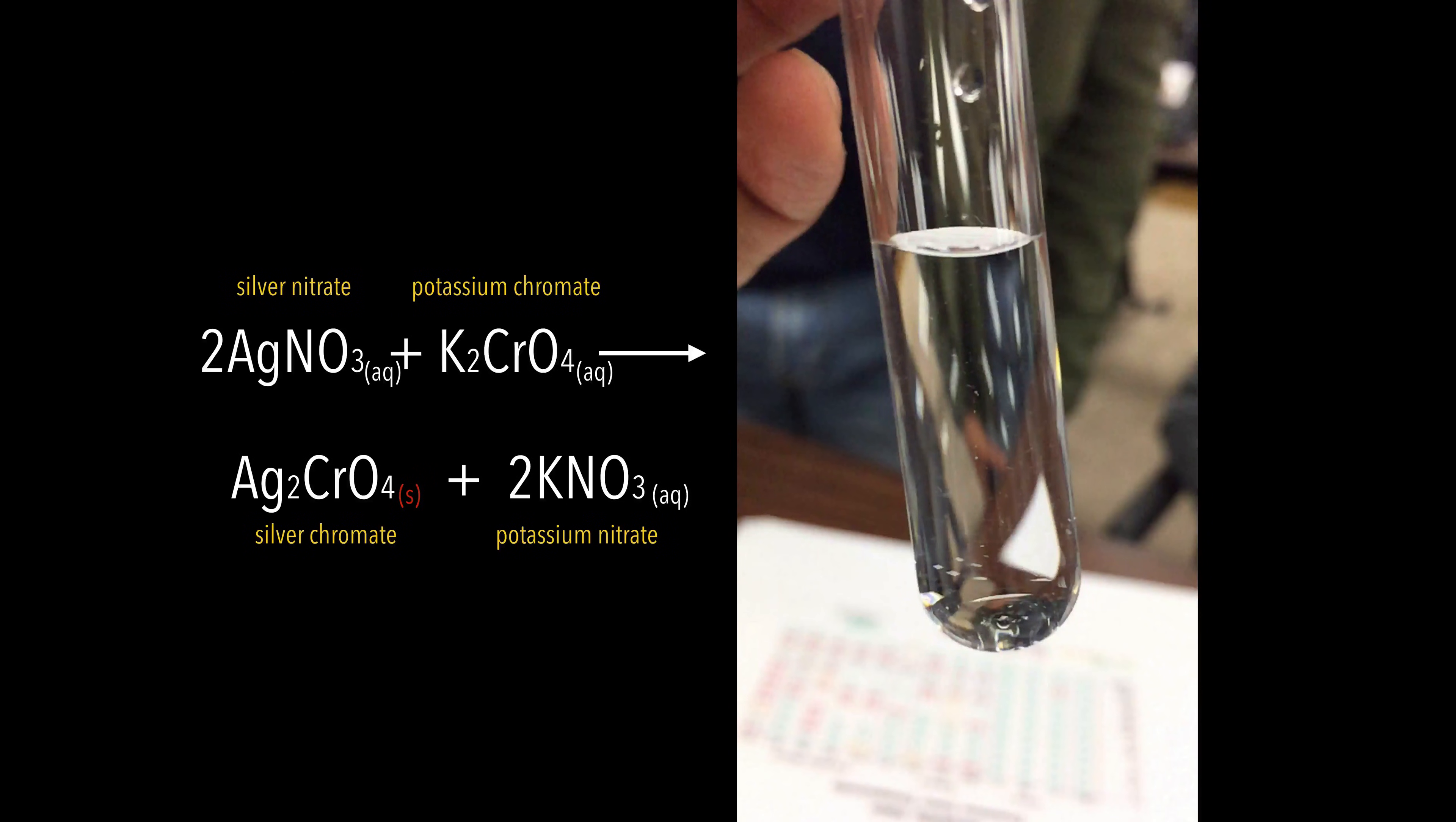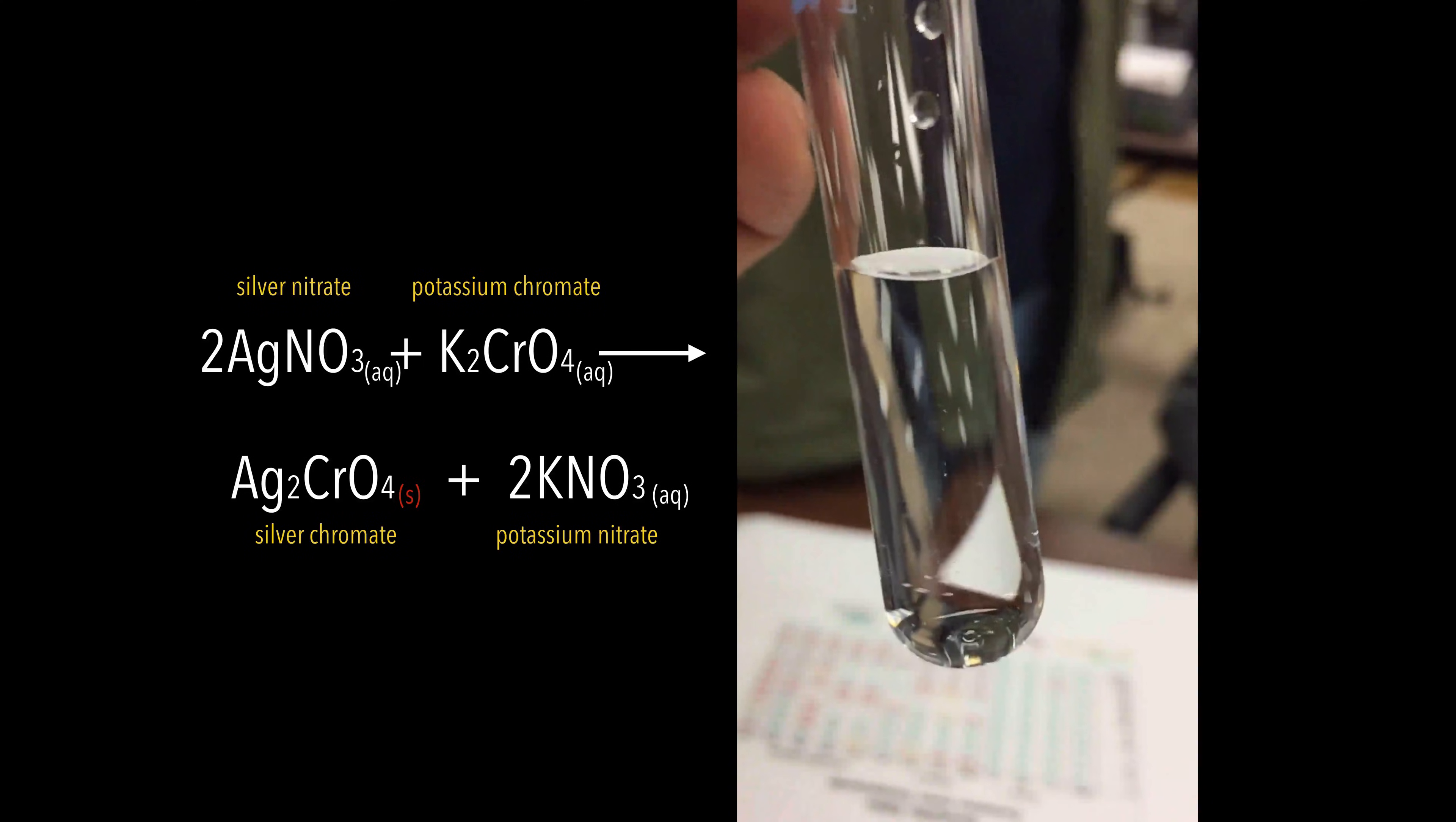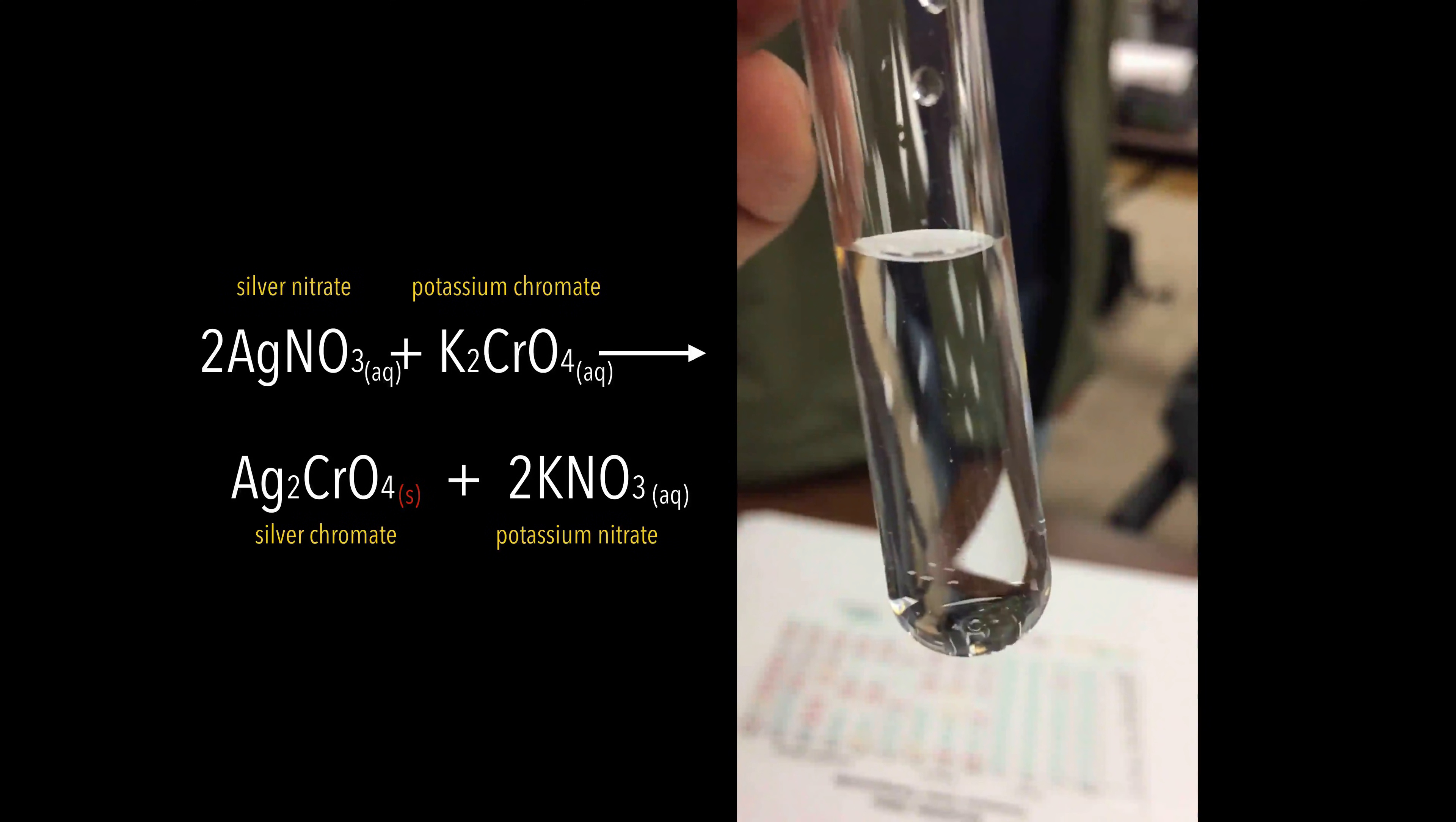This time we're taking a look at silver nitrate aqueous solution mixed with potassium chromate. Both of these solutions look like clear water. Pay attention to what happens here. I'm going to put it in slow motion for you.